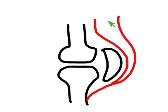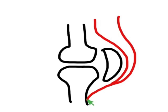The quadricep tendons — the big tendons at the front of your thigh — all gather together and attach to the patella tendon, and they insert in this one small little area right at the front of your bone.